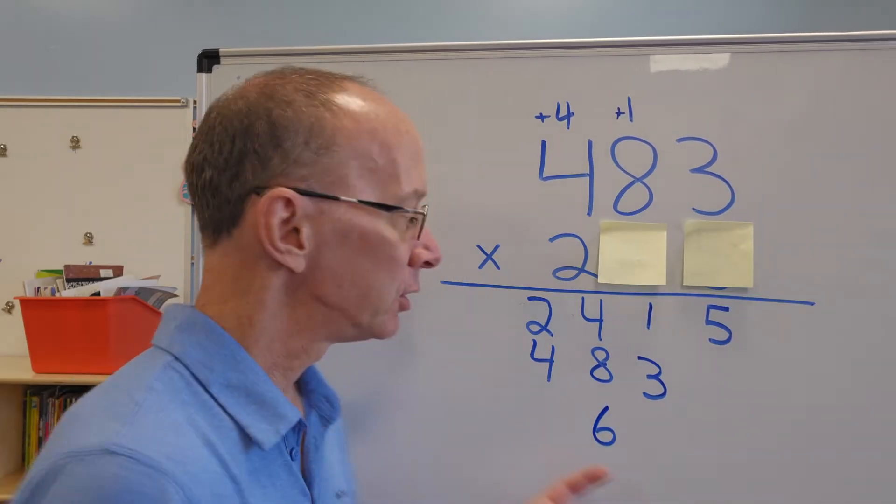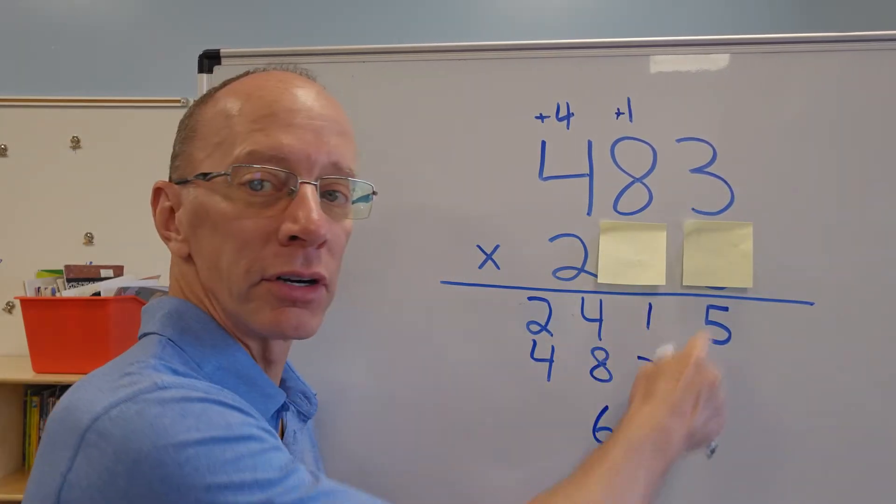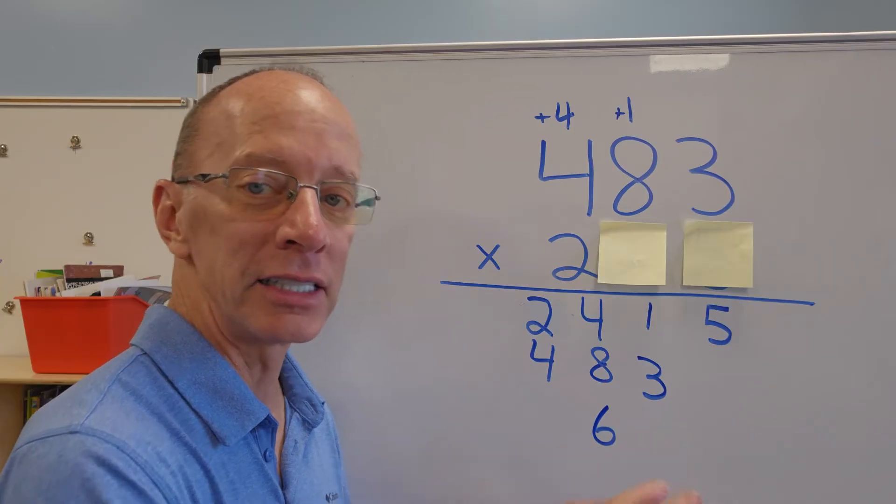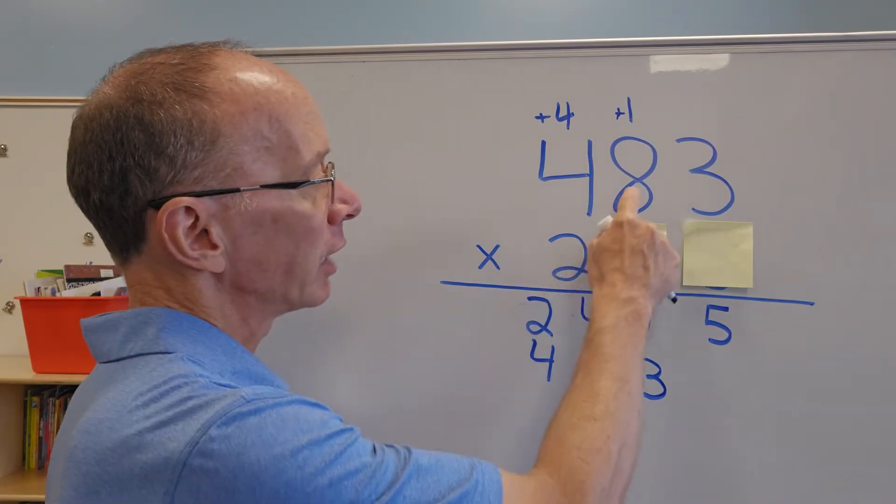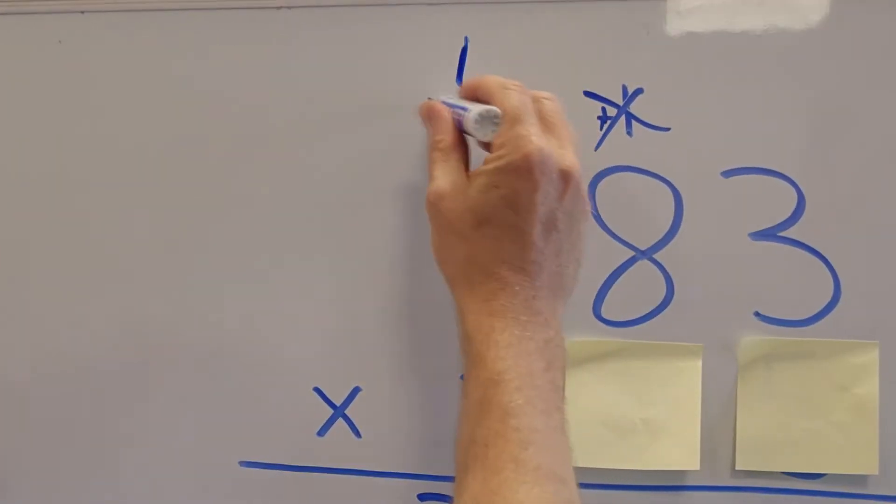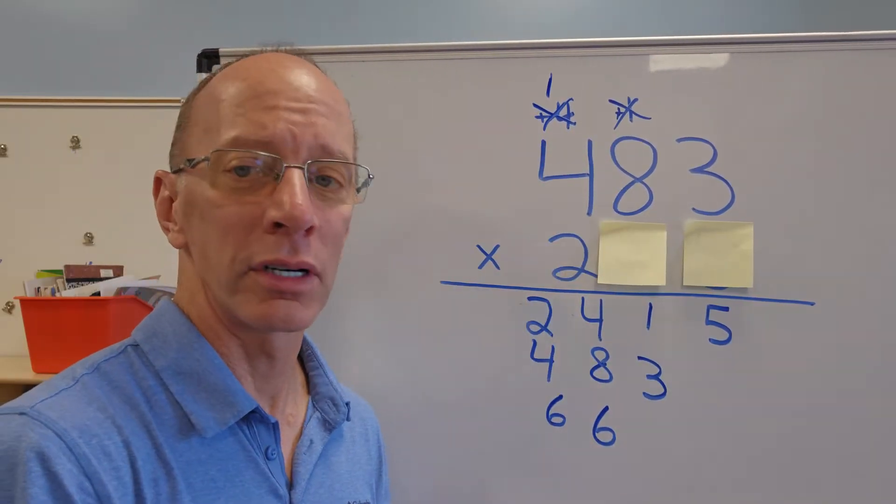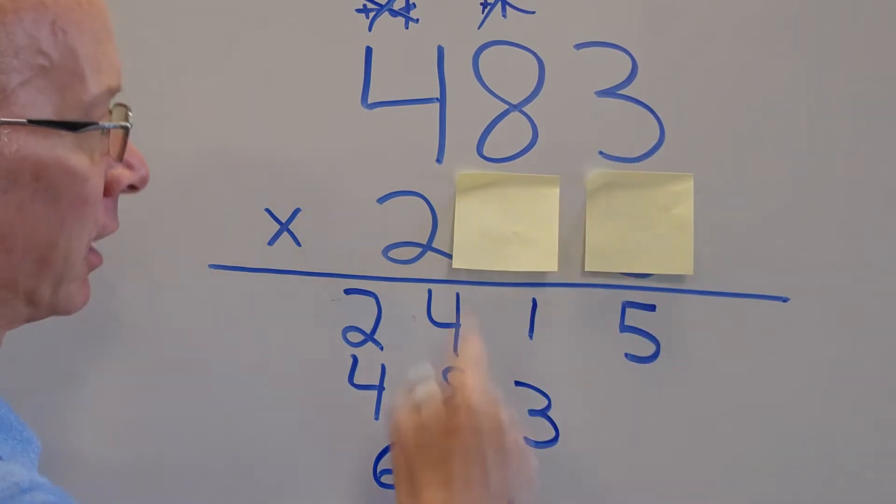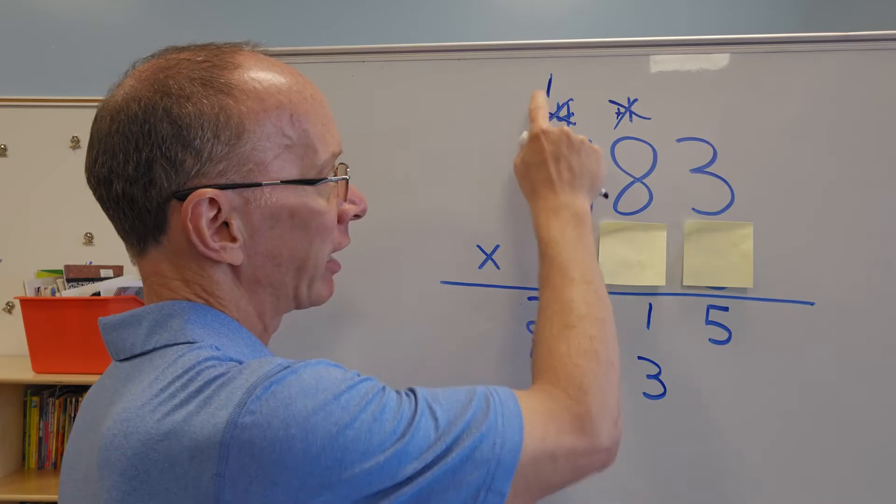Now, it's really important to line up all of your numbers. Make sure they're nice and neat and in the row. Two times eight is 16. So I put the six here. So I need to put the one right up here. Always check your work.